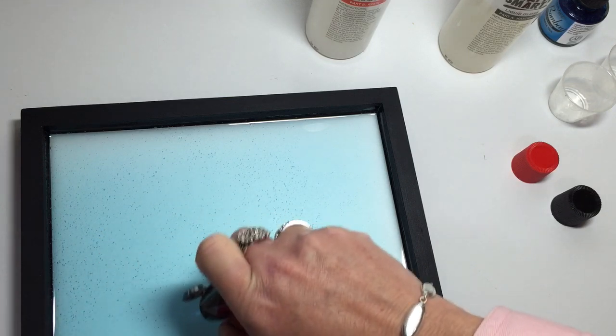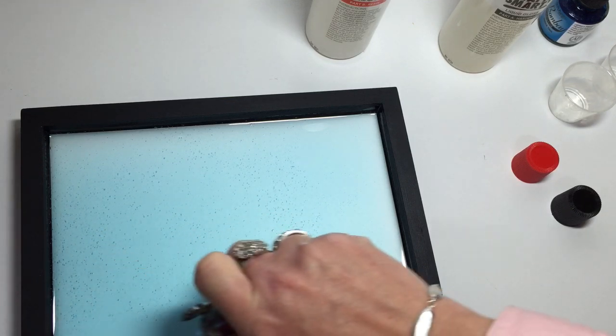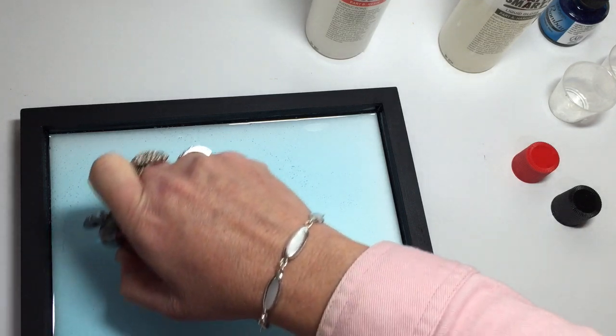You just hold the blow torch just above the surface so that the flame isn't sitting on the resin or you can burn the resin.